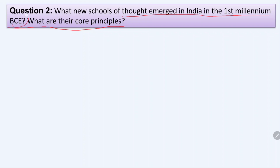BCE stands for Before Common Era. In the first millennium BCE, several schools of thought emerged in India. There are many schools mentioned in your book — like Jainism, Buddhism, Vedic Society, and Vedanta. We will cover all of them briefly so you can understand and write in your exam. In this chapter there were also several stories from the Upanishads, like Nachiketa and his quest — we will discuss those in the summary.